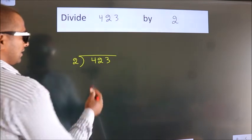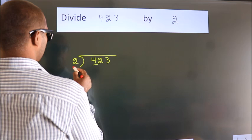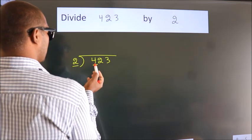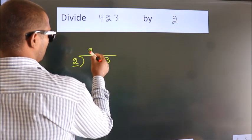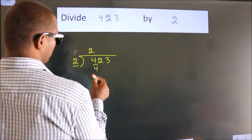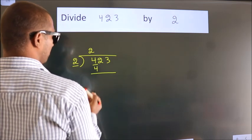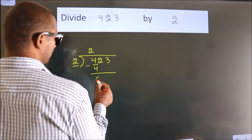Next. Here we have 4, here 2. When do we get 4? In 2 table. 2 2's, 4. Now, we should subtract. We get 0.